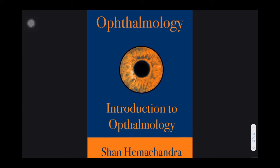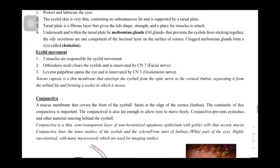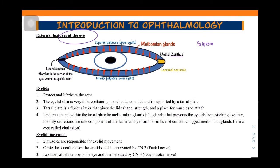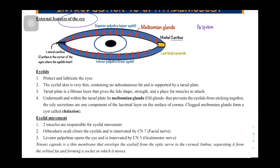Let's begin our first discussion on ophthalmology with an introduction to the subject. First, let's learn the external features of the eye. The word 'palpebra' means eyelid. We have two eyelids — one on the upper surface and one on the lower surface. The edges where they meet are called the canthus — the medial and lateral canthus. We have the lacrimal gland on the lateral aspect, and on the medial aspect is the drainage system called the lacrimal caruncle.